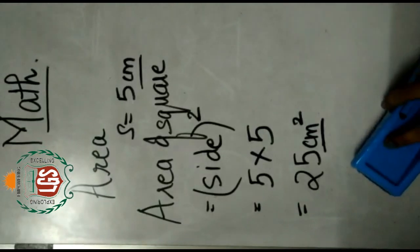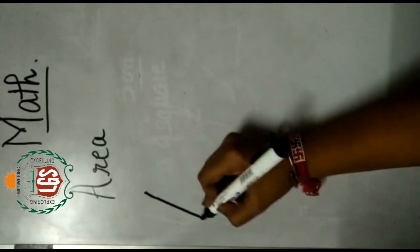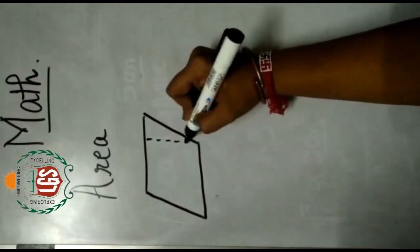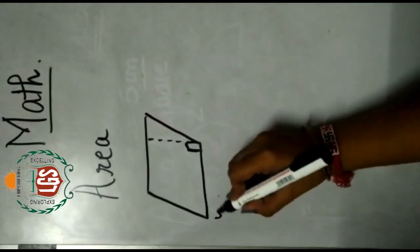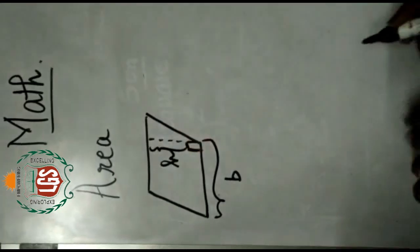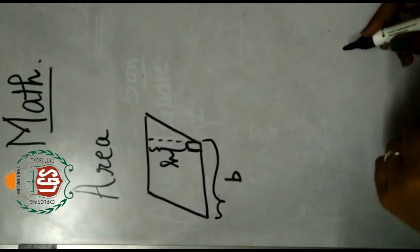Now moving on to the next, that is area of a parallelogram. For parallelogram I will just draw this parallelogram and show you what is the height and what is the base. This is the base. Base is always at the bottom. And height is this. So we require two things for parallelogram. One is the base and another is the height.